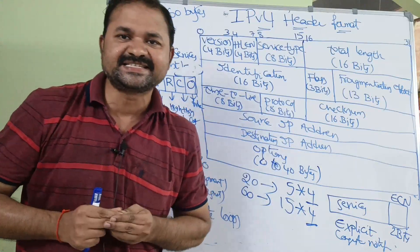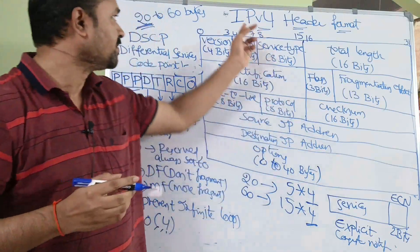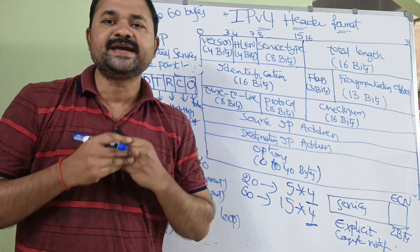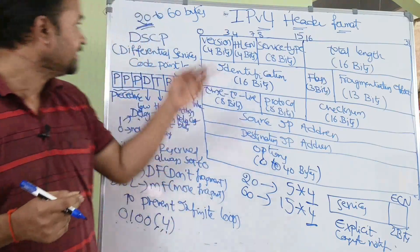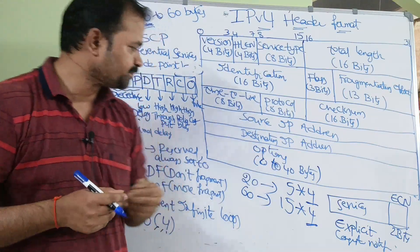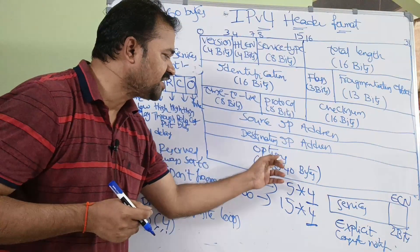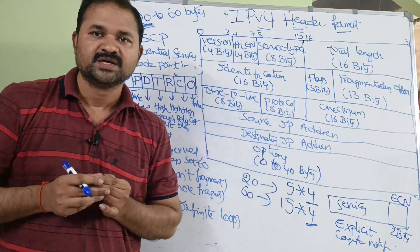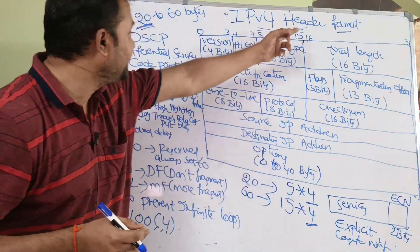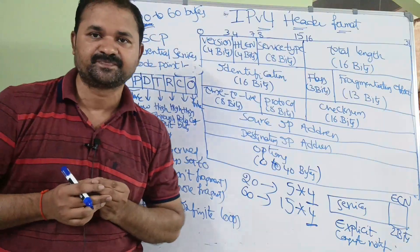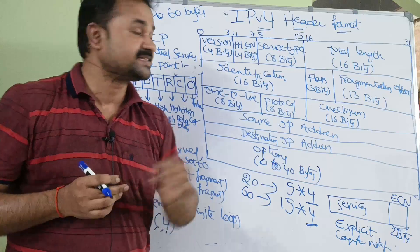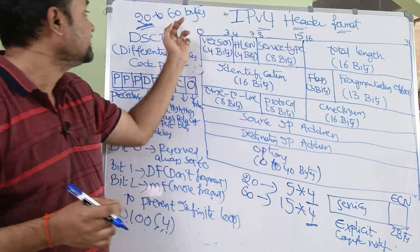Now let us discuss about the IPv4 header format. The size of the header ranges from 20 to 60 bytes. We have a field called options. Without the options field, the size of the header is 20 bytes. With various options, the size of the IP header is 60 bytes.